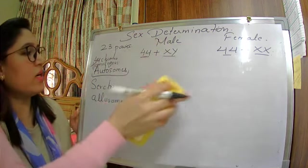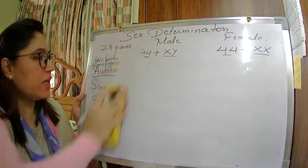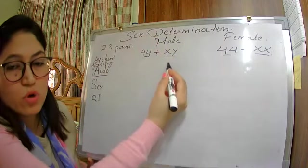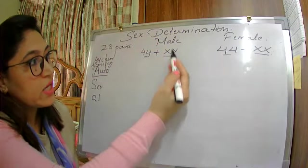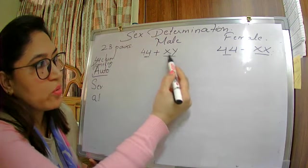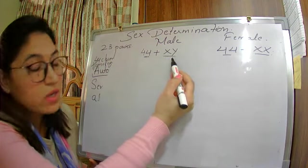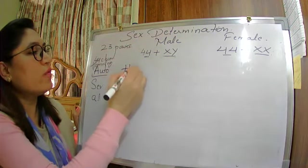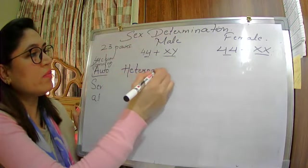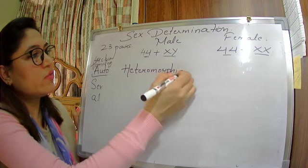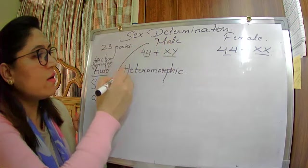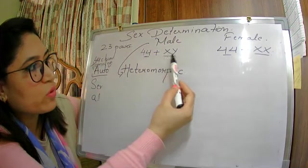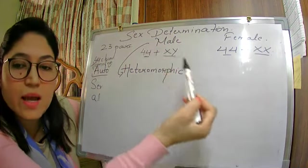There are two more terms associated with male and female respectively. In males, the two sex chromosomes are X and Y — both sex chromosomes are different in male. When both sex chromosomes are different in size and shape, we call them heteromorphic. So males are heteromorphic.